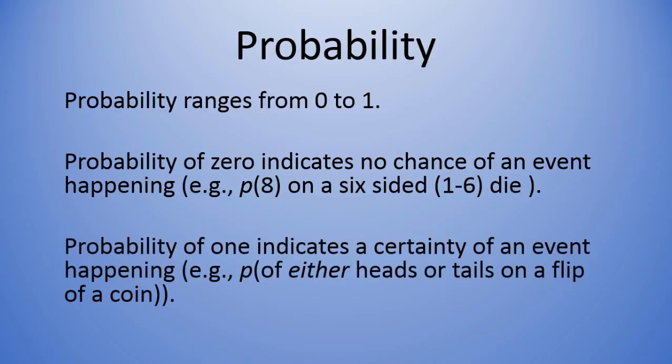A probability of one indicates a certainty of an event happening. So, for example, if we flip a coin getting either heads or tails on a single flip, that probability would be one or it's a certainty. Now, we're assuming a coin can't end up on its side, which would be highly unlikely. So, for all intents and purposes, that probability is one.